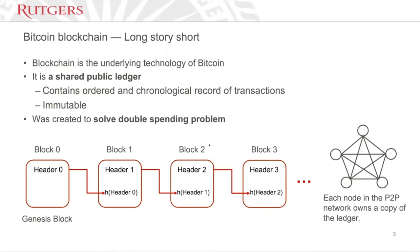The second feature is that it's immutable. This means once Abby sends, let's say, one bitcoin to me — no one can change this transaction on this ledger. I'll get to the part about why this ledger is immutable.